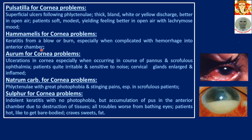Aurum for cornea problems: ulceration in cornea, especially when occurring in the course of pannus or scrofulis ophthalmia. The patient is quite irritable, sensitive to noise, with cervical glands enlarged and inflamed.